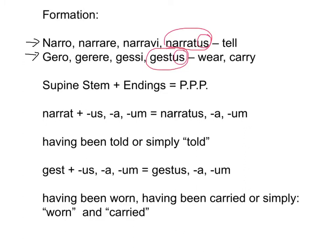Sometimes it will be -um. When you take that off, what is left is the supine stem. You will need the supine stem plus endings to create the perfect passive participle — in short, PPP.